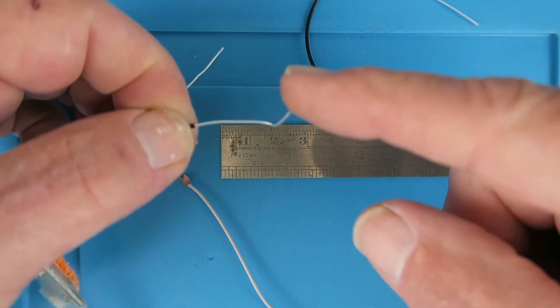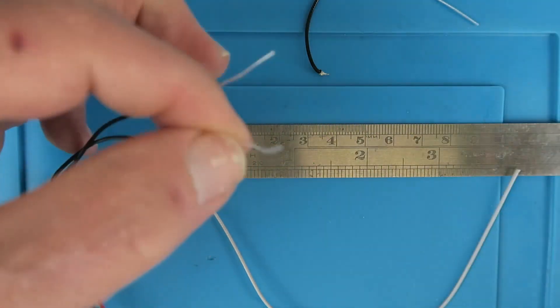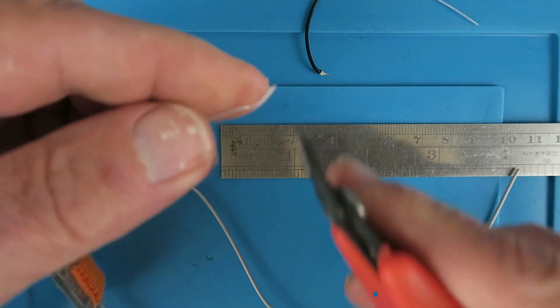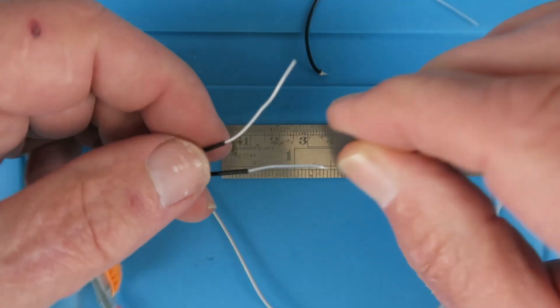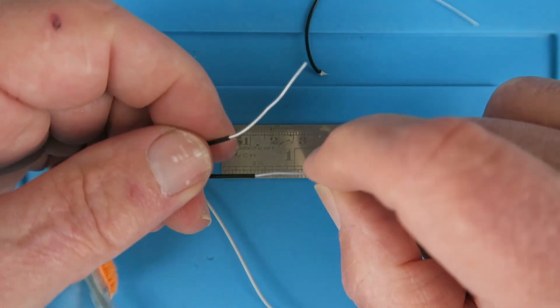To repair this antenna, the first thing we need to do is cut off the broken part like so, and now we will have to make it the correct length.